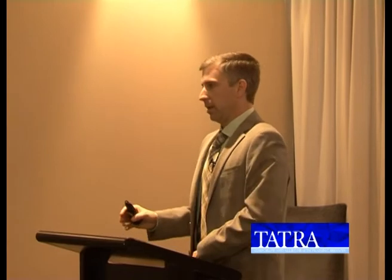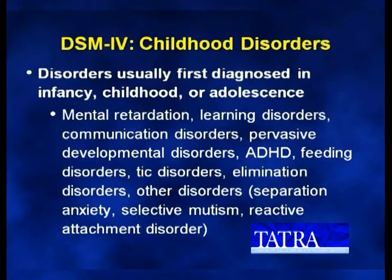We have this child disorders chapter, and really the only thing these problems have in common is they're usually first diagnosed in kids. We have thematically different problems here. One of the major themes of DSM-5 is that the developers pulled out problems and stuck them together based on similarity in symptoms. We don't have the distinctions anymore between child problems and adult problems. For example, separation anxiety disorder is now an anxiety disorder.